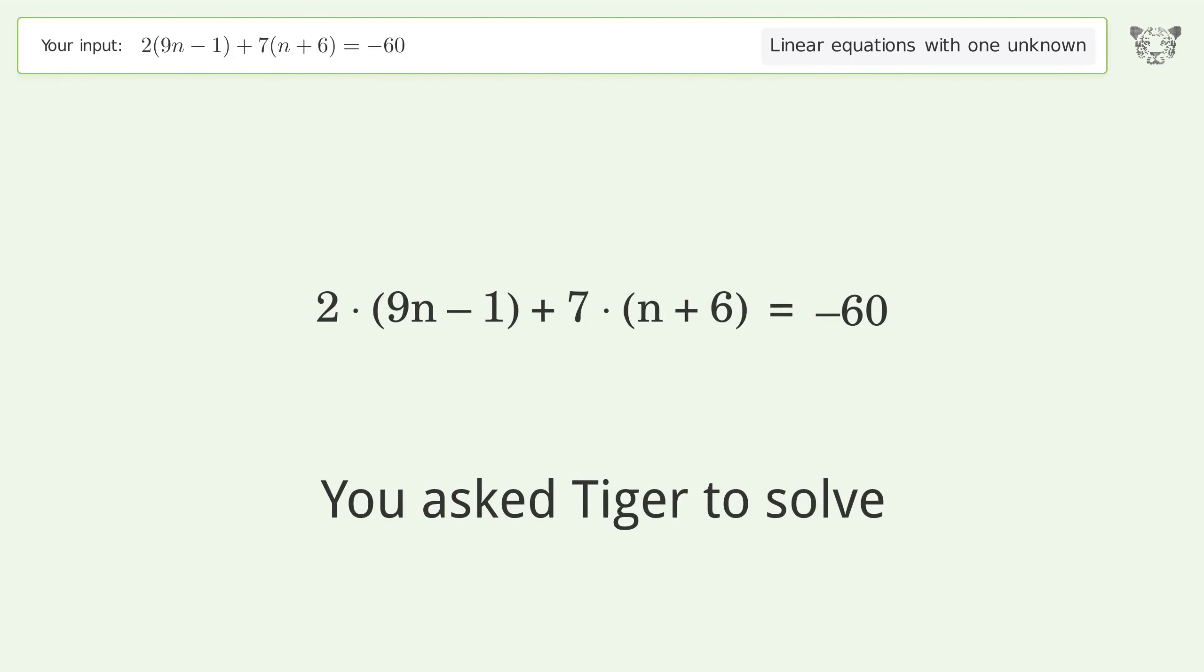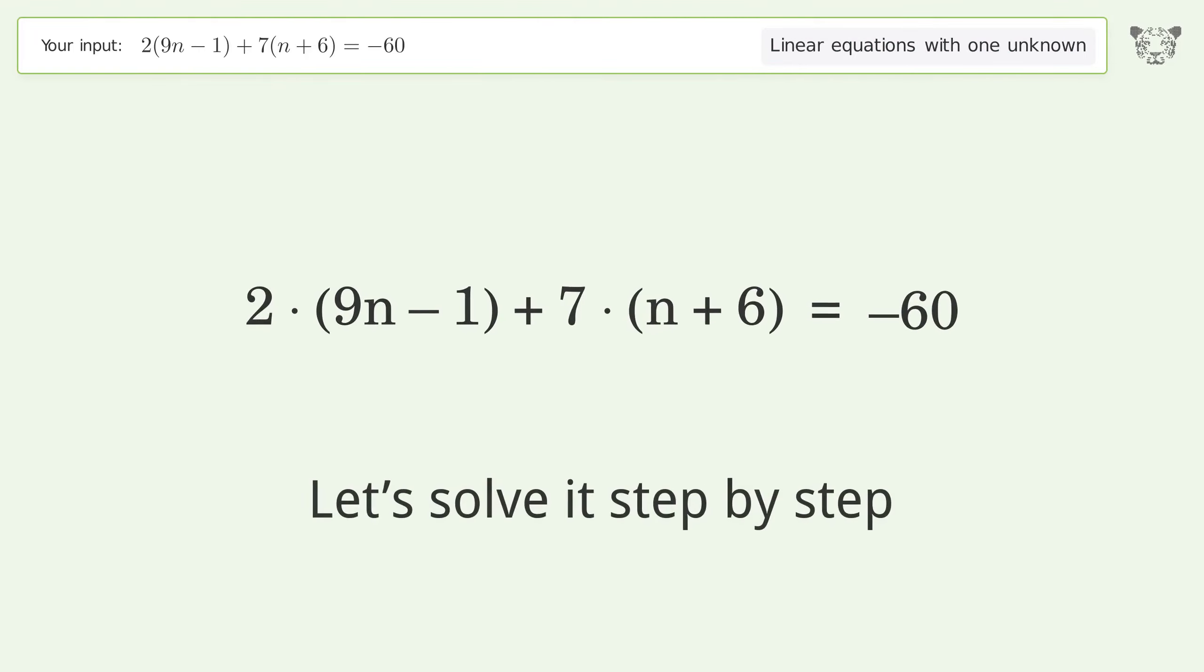You asked Tiger to solve this linear equation with one unknown. The final result is n equals negative 4. Let's solve it step by step.